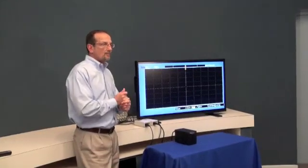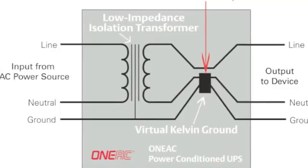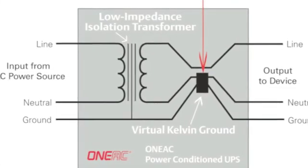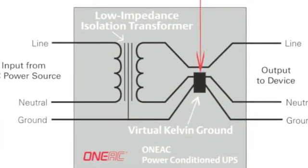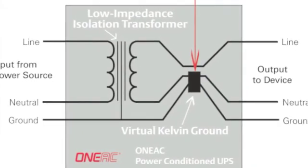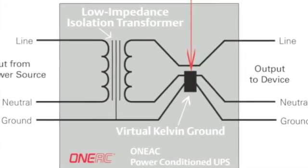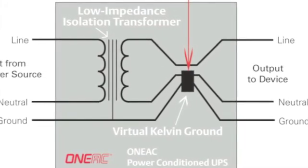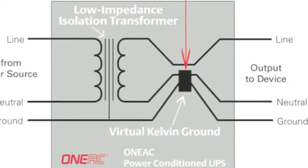So what do we do about those? Here at Oniak, we have a power conditioner, which is an isolation-based, transformer-based power piece of equipment that regenerates or reconnects the neutral and ground line on the secondary side. So it regenerates your neutral ground bond. That will alleviate a lot of noise situations we're seeing.